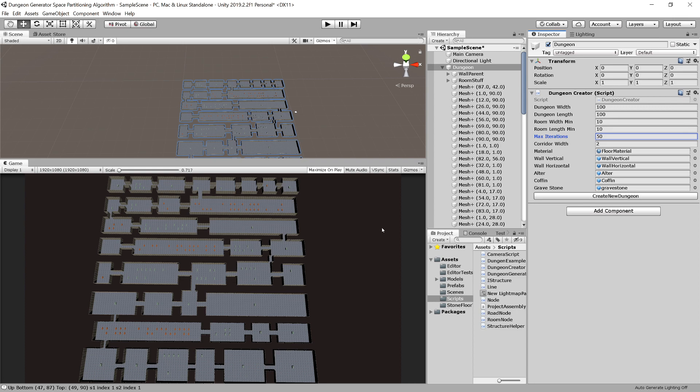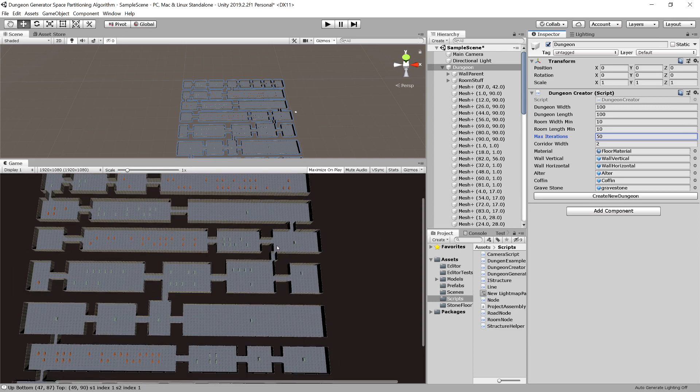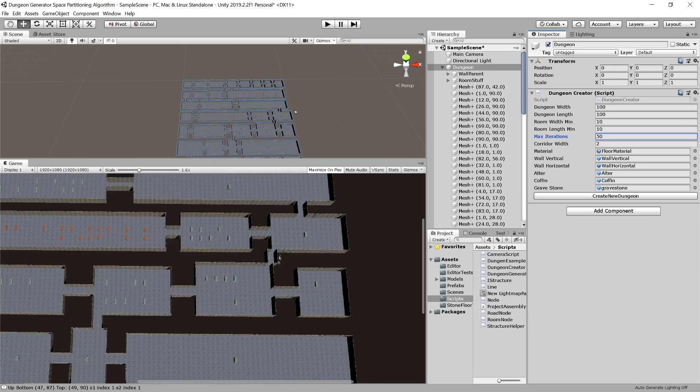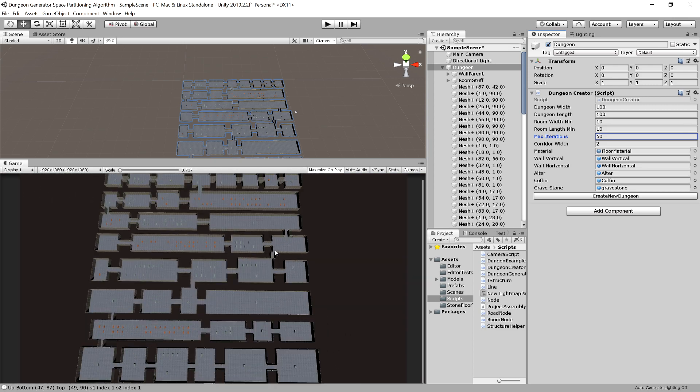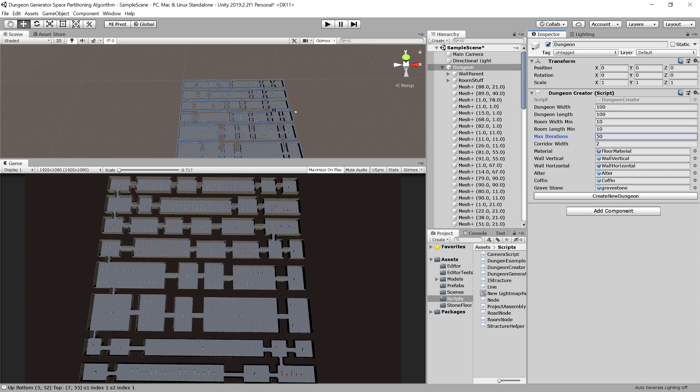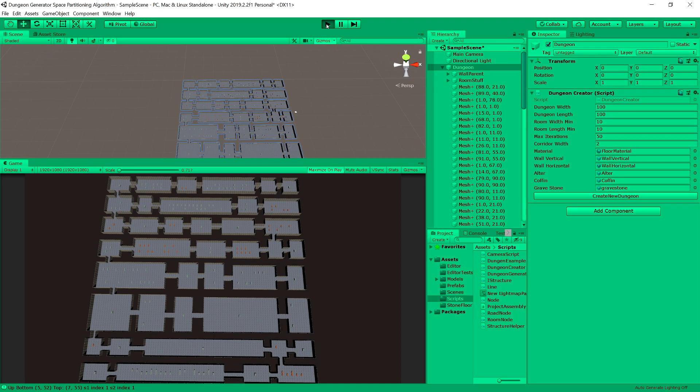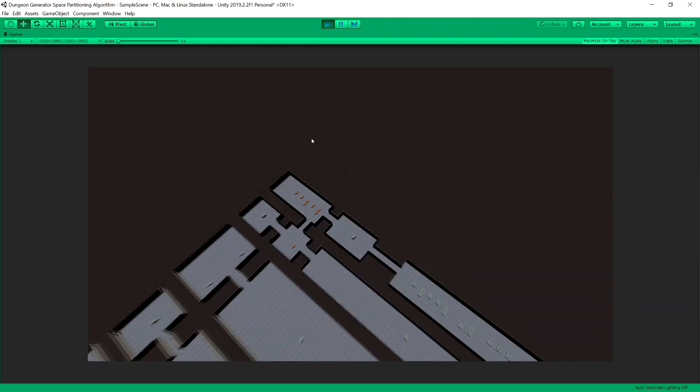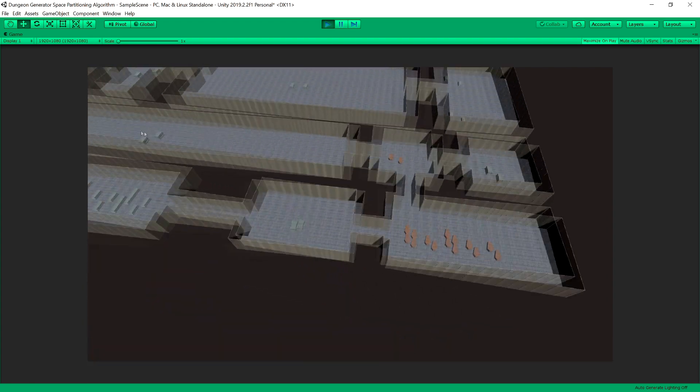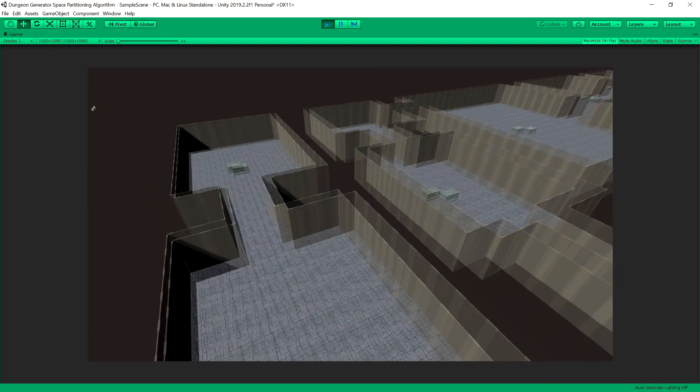Then we connect those rooms with corridors, sometimes unsuccessfully as you can see here. Well, it is walkable but it doesn't look very good, but it happens. And it is all in 3D. Let's enter the play mode. The rooms are each connected with a simple corridor.